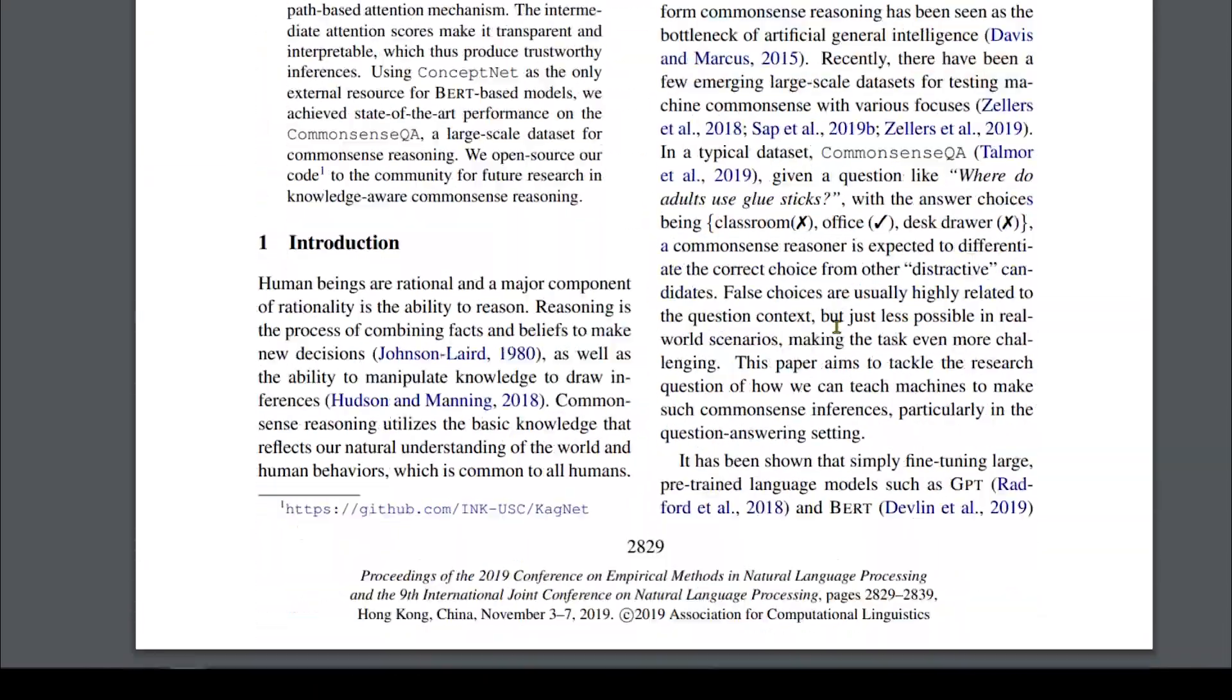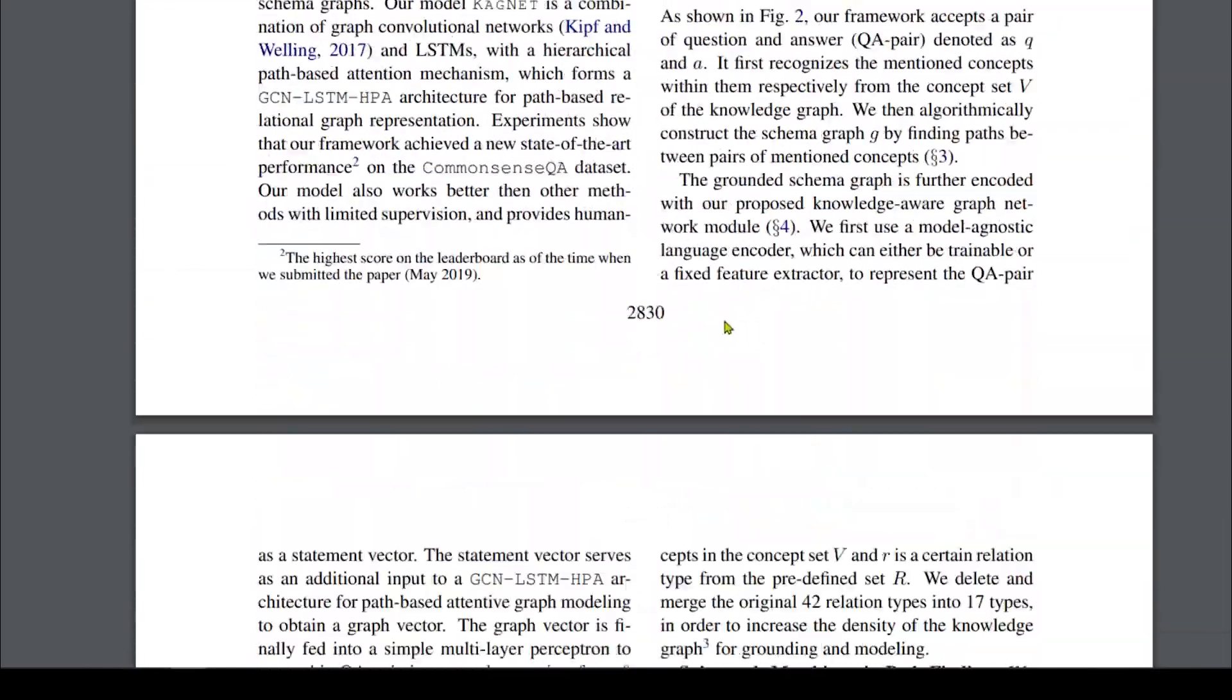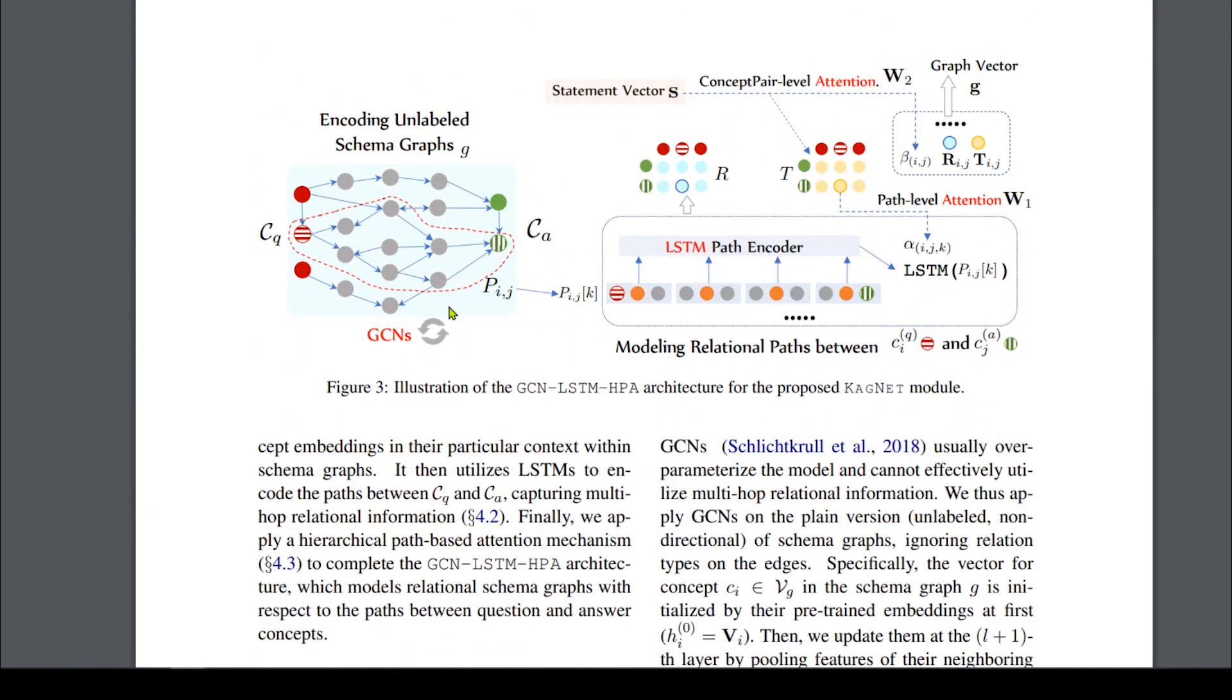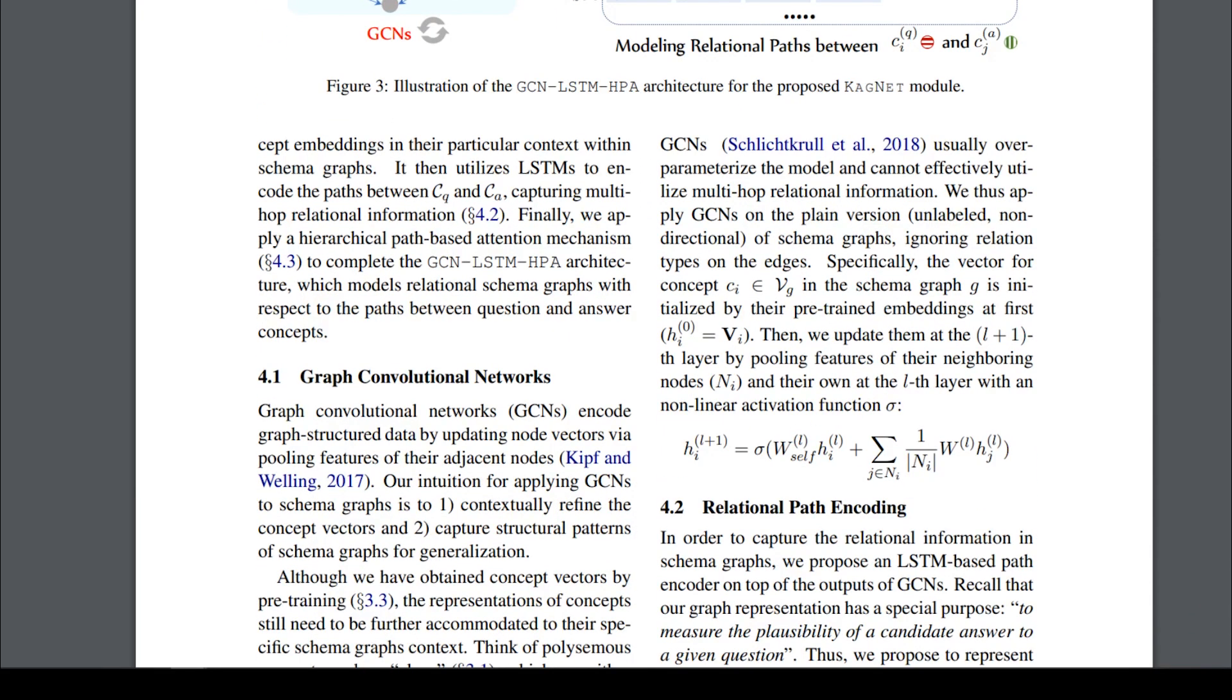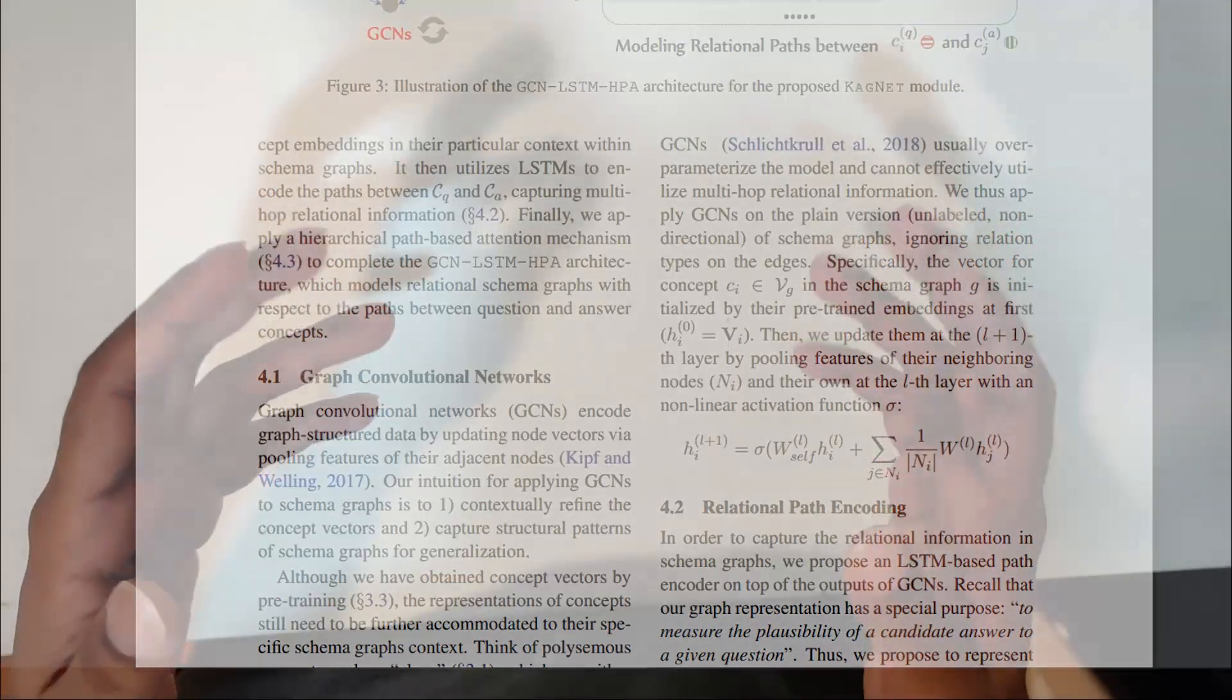Then it passes it to a convolutional graph neural network, then passes to an LSTM. As the output, it can represent or learn question answering pairs by thus learning common sense.